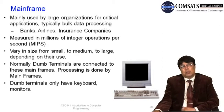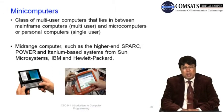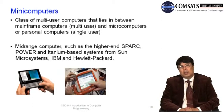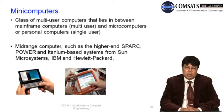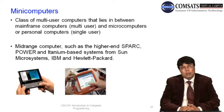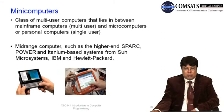Between PCs and mainframe computers are minicomputers, also called midrange computers. They still support multiple simultaneous users but in smaller numbers. Examples include Spark computers, Power computers, PDP-11, and PDP-7. These are mid-range machines that provide multi-user capability without the scale of a full mainframe.